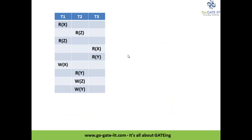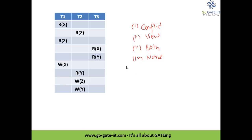The last example is left for you to solve for practice. The question asks you to determine whether the schedule is: (1) view serializable, (2) conflict serializable, (3) both, or (4) none of the above. For your ease, the answer is 'both.' The solution is left to the viewer.